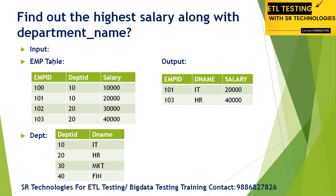Here we have two input tables: an employee table and a department table. The employee table has an employee column, department ID column, and salary column. The department table has two columns: department ID and department name. The question is: find the highest salary along with the department name. The output should be employee ID, department name, and salary — for example, highest salary in department 10 is 20,000 and in department 20 is 40,000.